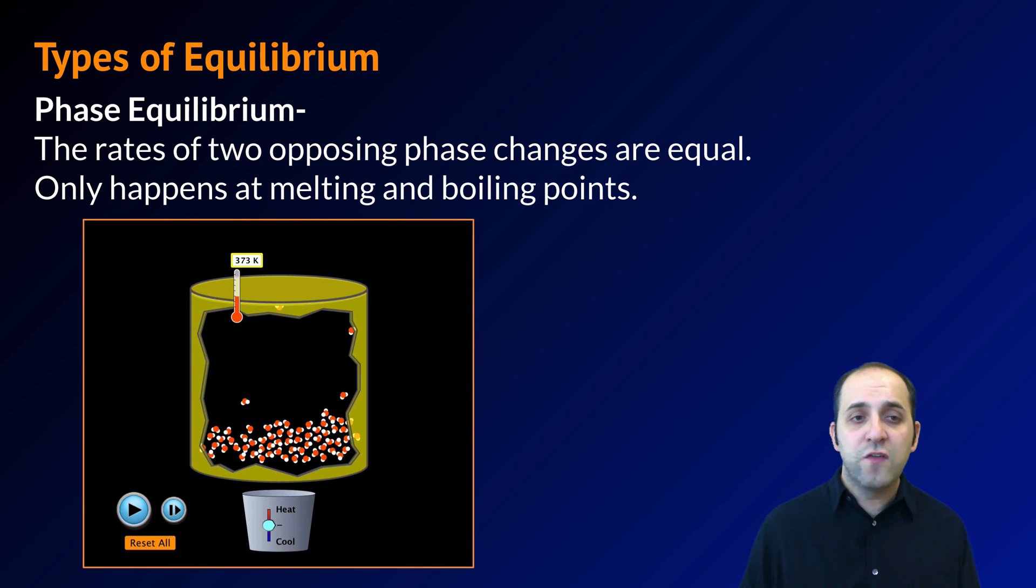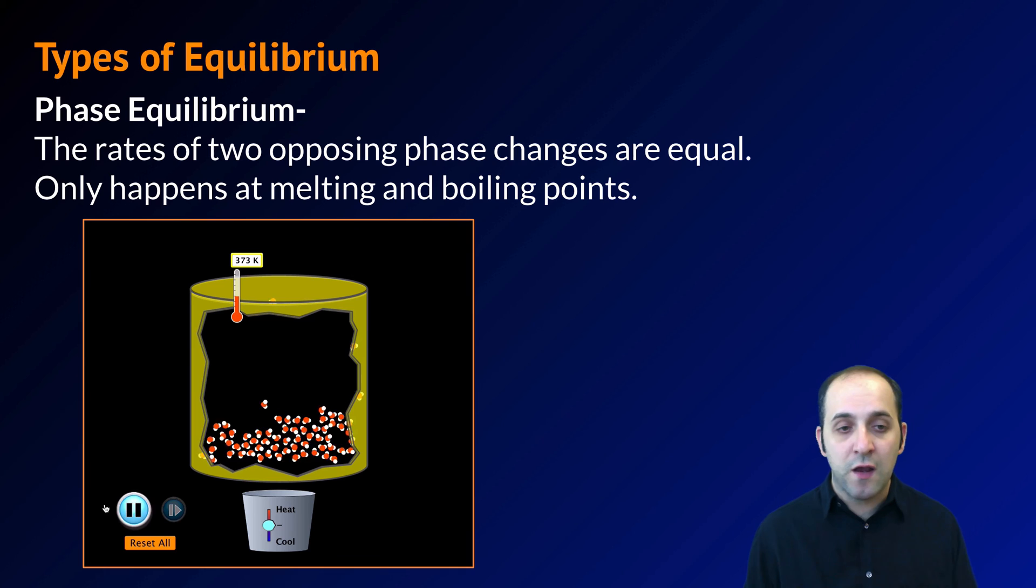Our last type of equilibrium is what's called a phase equilibrium, where the rates of two opposing phase changes are equal. We've talked about this previously in this course. This only happens at the melting and boiling point of a substance.